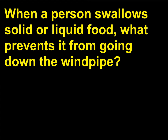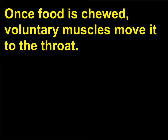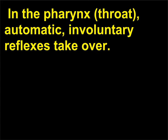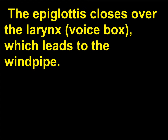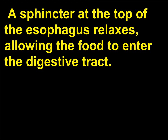When a person swallows solid or liquid food, what prevents it from going down the windpipe? Once food is chewed, voluntary muscles move it to the throat. In the pharynx (throat), automatic involuntary reflexes take over. The epiglottis closes over the larynx (voice box), which leads to the windpipe. A sphincter at the top of the esophagus relaxes, allowing the food to enter the digestive tract.